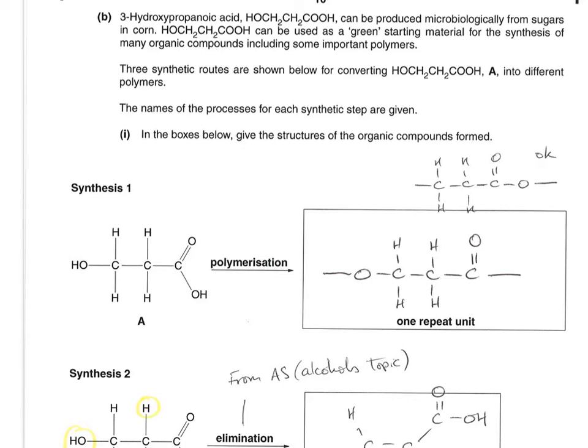Any question on polymerization, you need to be asking yourself two questions. Have I got any carbon-carbon double bonds? Because if I have, it's probably going to be an addition polymer. If not, it's going to be a condensation polymer. We can't see any carbon-carbon double bonds, so this is going to be condensation polymerization.